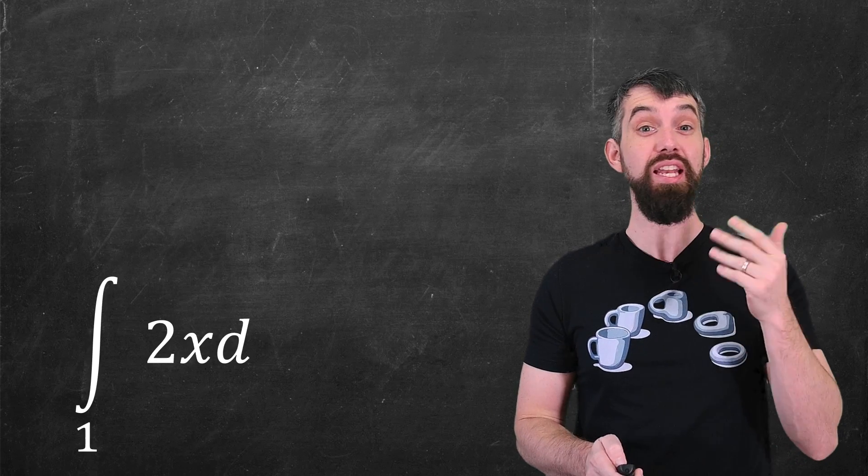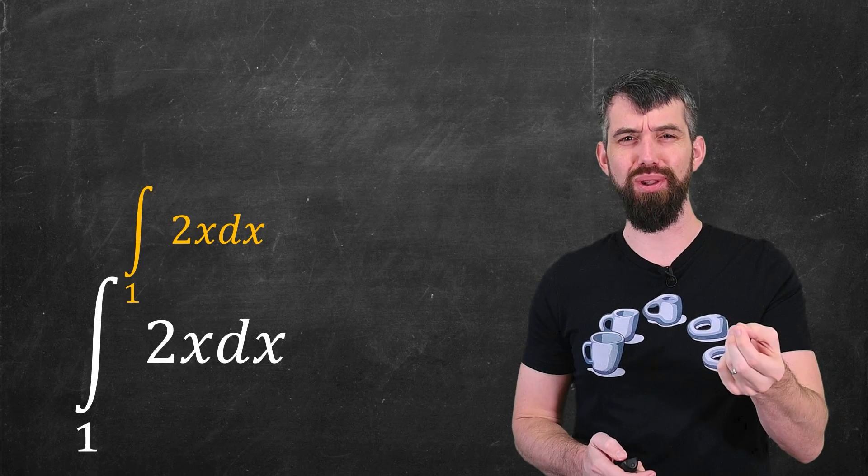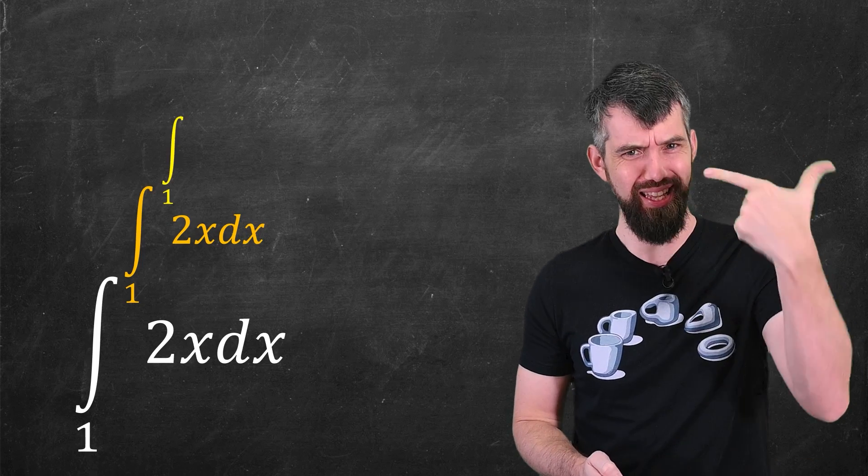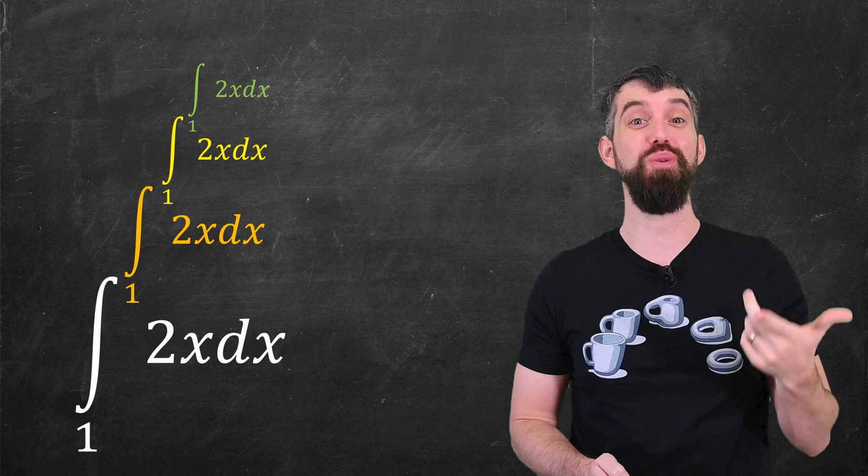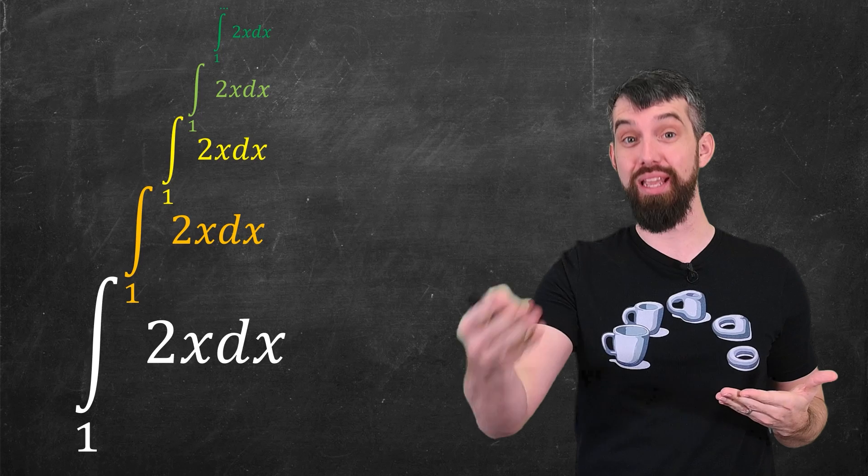In this video, we're going to study the integral of 2x from 1 up to the integral of 2x from 1 up to and so on and so forth. What is the value of this nested or iterated integral?